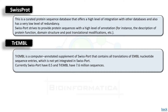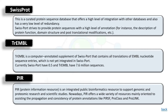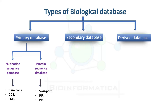Currently SwissProt has 0.5 million sequences and TrEMBL has 7.6 million sequences. Last is PIR — Protein Information Resource — an integrated public bioinformatics resource to support genomic and proteomic research. PIR offers a wide variety of resources mainly oriented to assisting the propagation and consistency of protein annotations, such as iProClass, ProClass, and iProLink. This completes the discussion about primary databases.